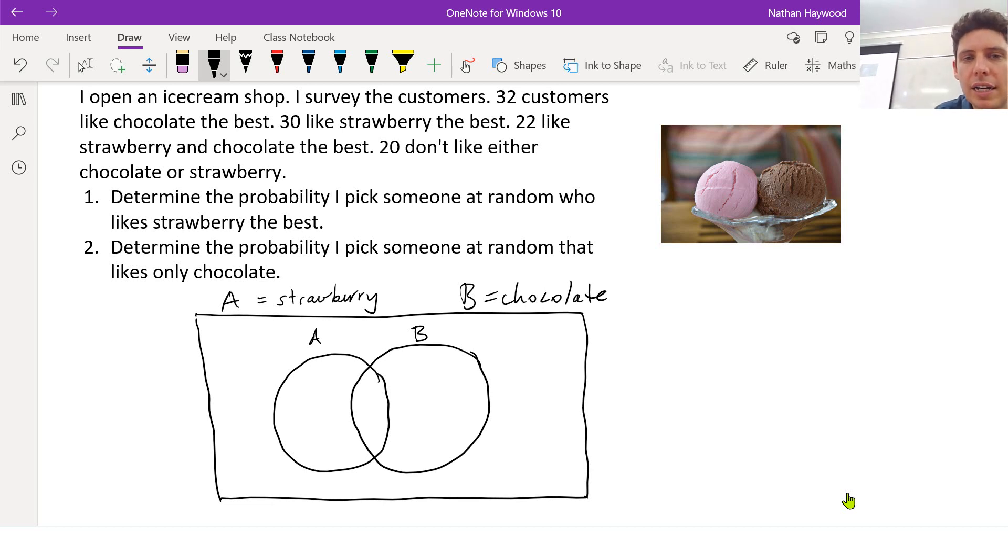Alright, so let's have a look at this. And then outside the two circles is what? The people that don't like either. So we can start with that. We know 20 of them don't like either.